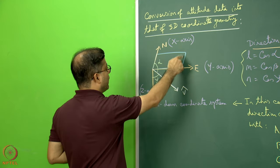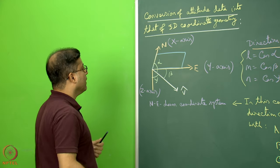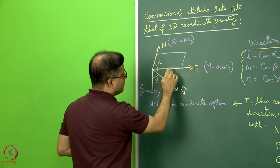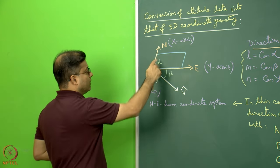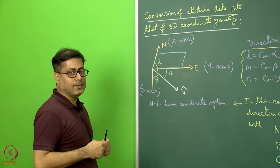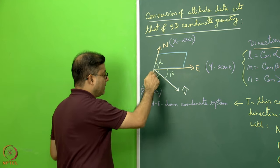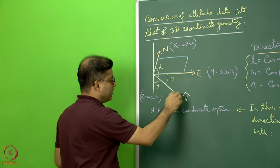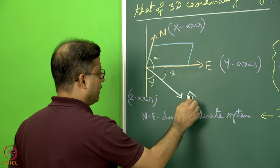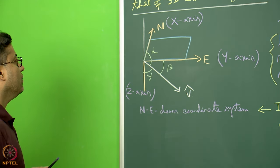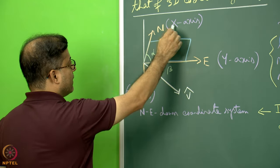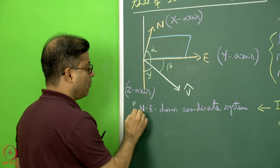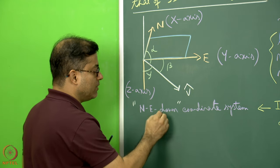Now imagine this blue parallelogram is a horizontal surface and this is the north geographic direction. Clockwise moving from north, 90 degrees will be east, and I take this east as the y-axis. This x-axis and y-axis are naturally making a 90-degree angle. I am considering vertically down as the z-axis. Now think that there is a line lying like that, represented as a vector v. This coordinate system — where north is the x-axis, east is the y-axis, and vertical is the z-axis — we can call it the North-East-Down coordinate system.